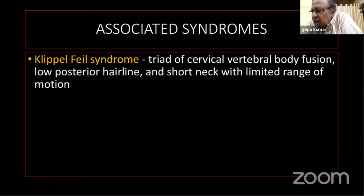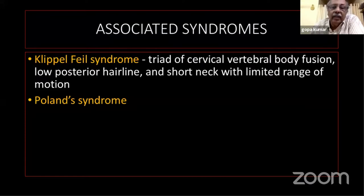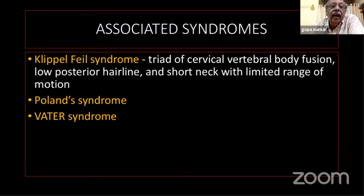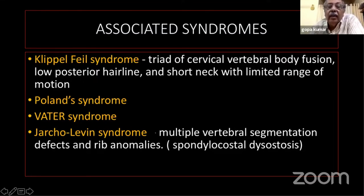Several associated syndromes exist. The common ones are Klippel-Feil syndrome — a triad of cervical vertebral body fusion, low hairline, and short neck with limited range of neck movement. Poland syndrome — absence of pectoralis major along with syndactyly. VATER syndrome — vertebral, anal, tracheoesophageal, and renal anomalies, commonly associated with radial club hand. And Jarcho-Levin syndrome, which is spondylocostal dysostosis — showing multiple vertebral segmentation defects — has also been occasionally reported, including a case from KMC Manipal.